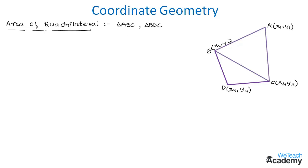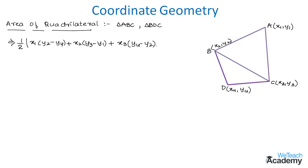The general formula to find the area of a quadrilateral is: Area = ½ |x1(y2 − y4) + x2(y3 − y1) + x3(y4 − y2) + x4(y1 − y3)|. This is the formula to find the area of a quadrilateral.